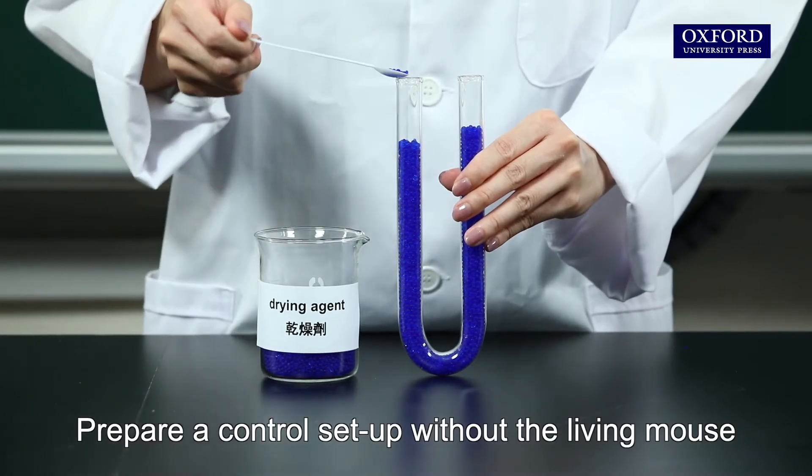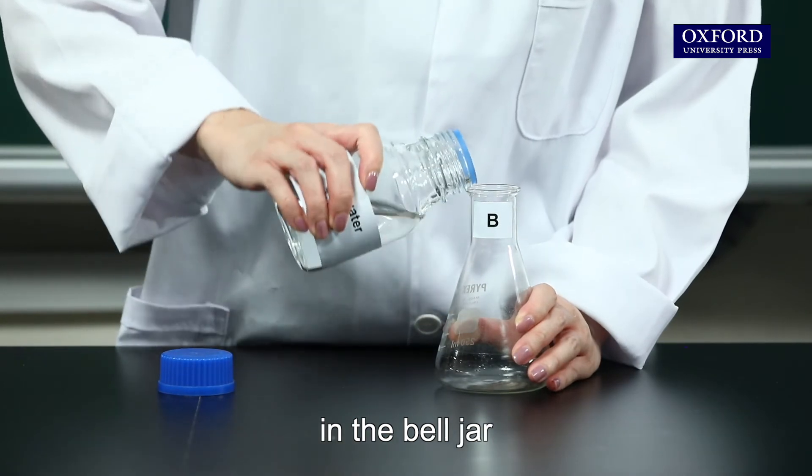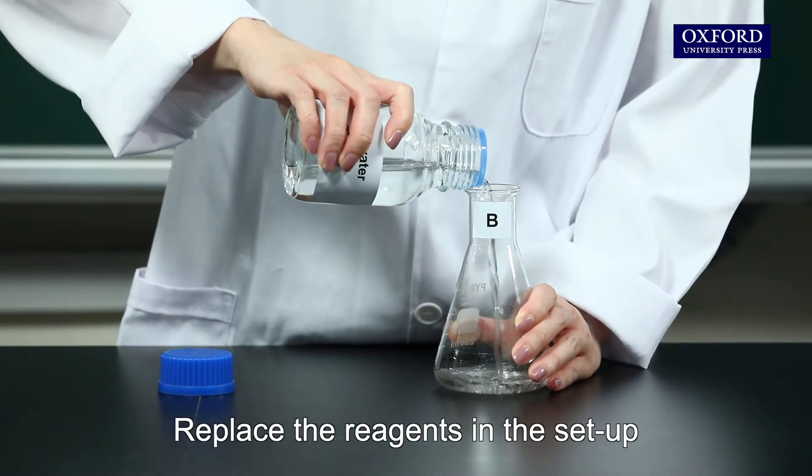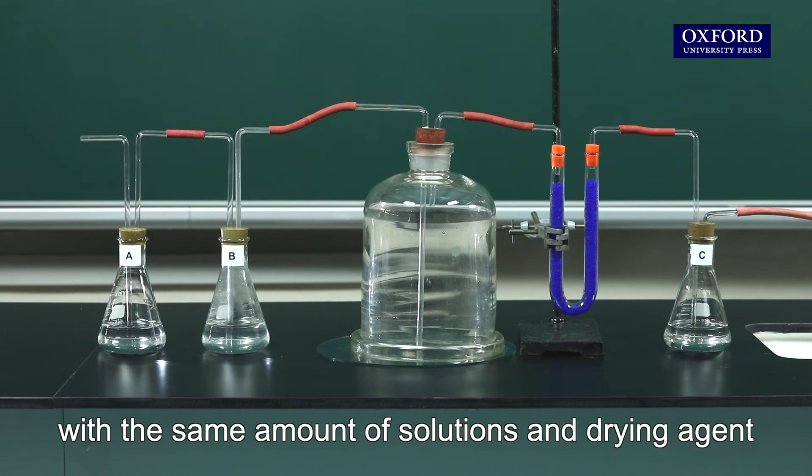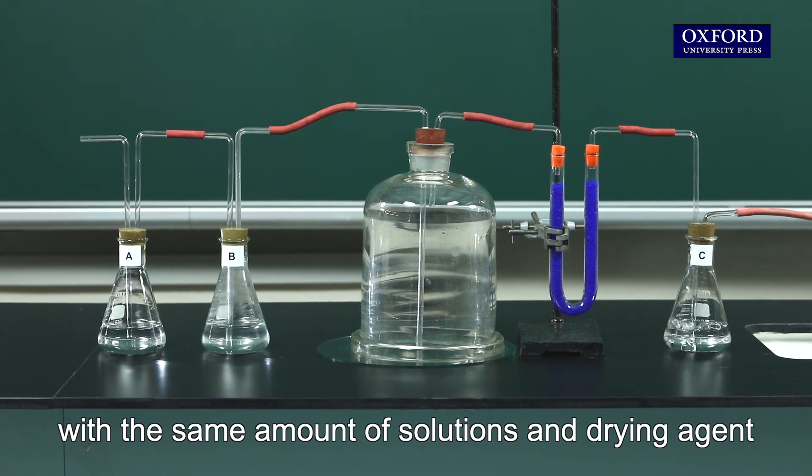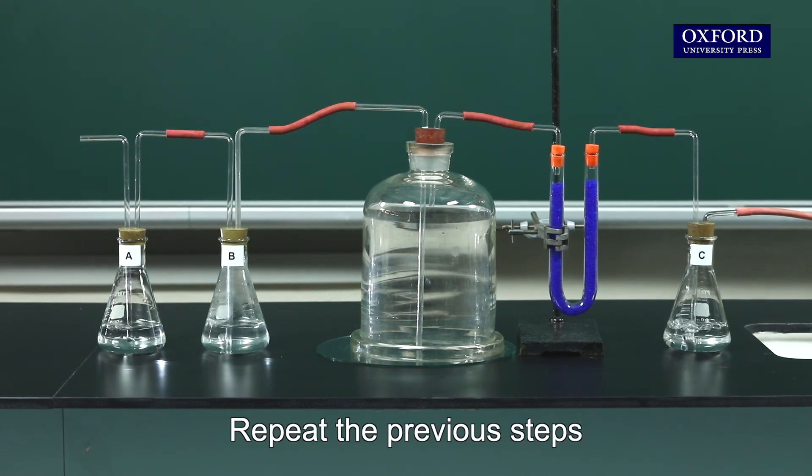Prepare a control setup without the living mouse in the bell jar. Replace the reagents in the setup with the same amount of solutions and drying agent. Repeat the previous steps.